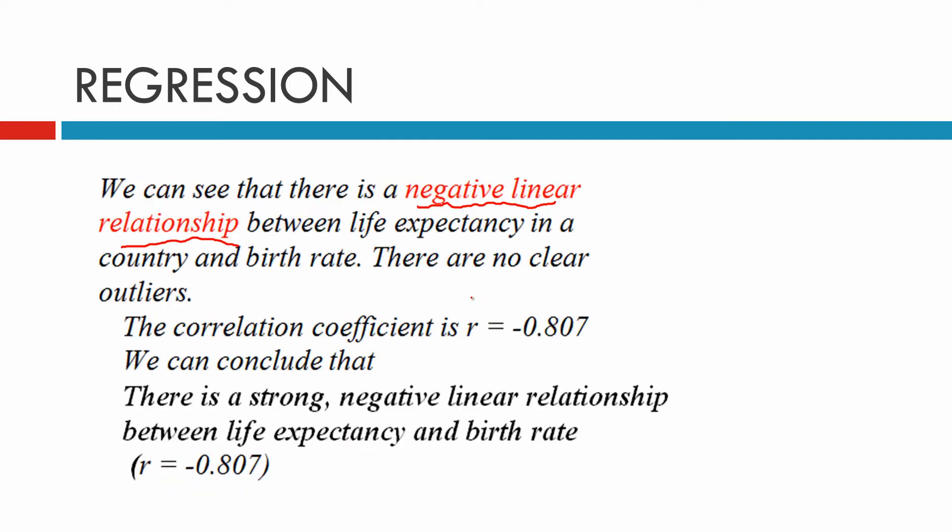We did not see any outliers there at all. The correlation coefficient, when we find it on our calculator, is negative 0.807. So we can conclude that there is a strong negative linear relationship between life expectancy and birth rate, r equals negative 0.807.